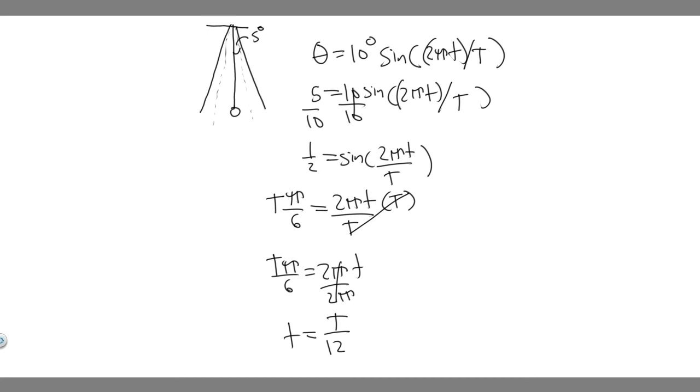So basically, do 4 times the period divided by 12, and if you go ahead and do this, you're going to get it equals, this is just going to cancel and make it one third, so T over 3.